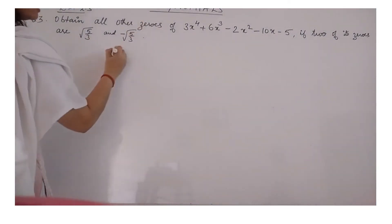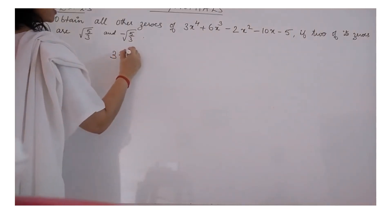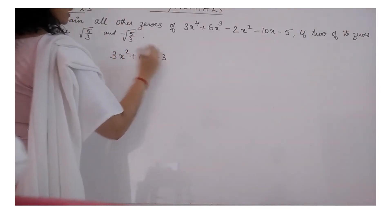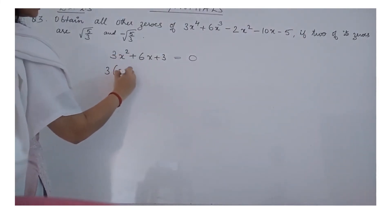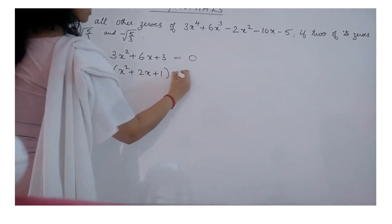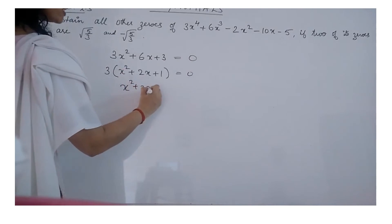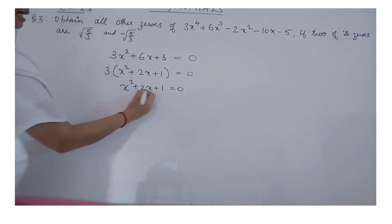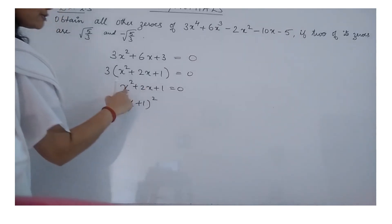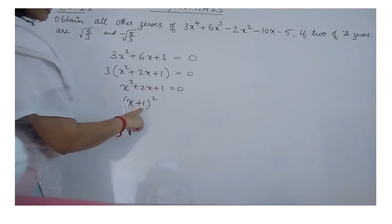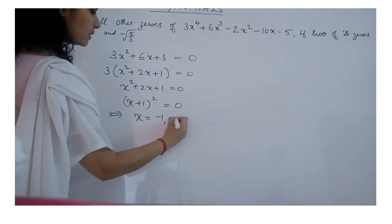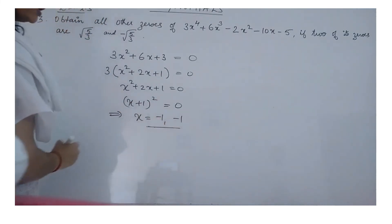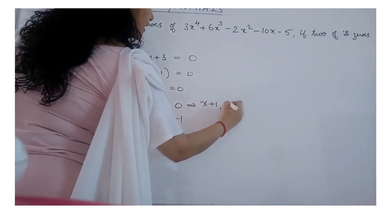We got the other factor of the polynomial as 3x² + 6x + 3. To find the remaining zeros, we equate it to 0. Taking out 3, we get x² + 2x + 1 = 0, since 3 cannot be 0. This can be written as (x + 1)² = 0, using the identity (a+b)² = a² + 2ab + b². So x² + 2x + 1 = (x+1)², giving us two factors (x+1) and (x+1), meaning x = -1 and x = -1.